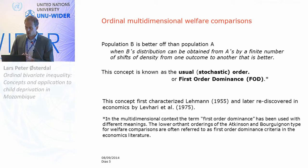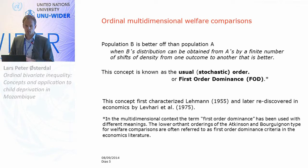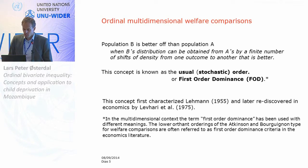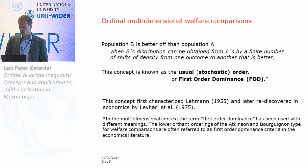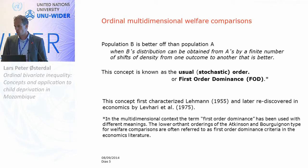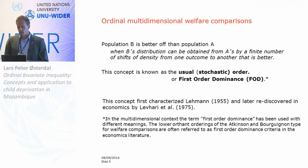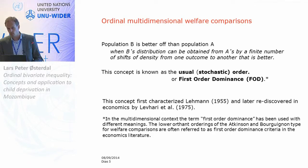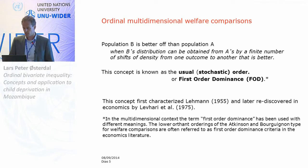Let me first address the issue of making ordinal, multidimensional social welfare comparisons. There is actually a well-known, natural criterion for comparing population distributions: population B is better off than population A whenever B's distribution can be obtained from A's by a finite number of shifts of population density from one outcome to another that is better. This concept is also known as the usual stochastic order, or first-order dominance — the natural multidimensional analog to the first-order dominance concept. It's an old concept, although perhaps surprisingly it hasn't until recently been used in applied welfare economics, though the term first-order dominance has been used with other meanings in the welfare economics literature.